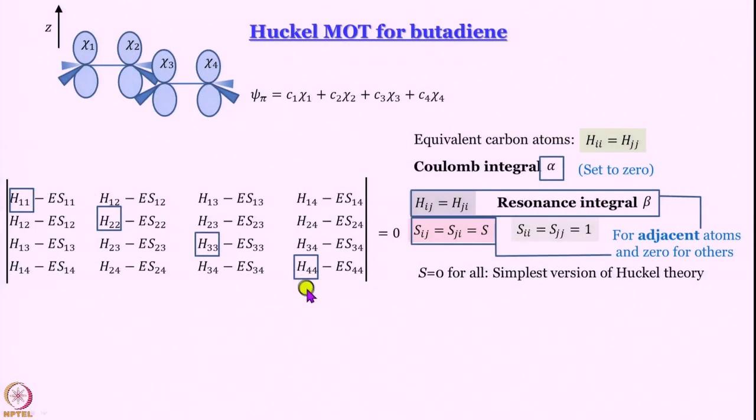So now this determinant becomes very simple. For all these H11, H22, H33, H44 I can write alpha and then I can happily set them to be equal to 0. S11, S22 all that is happily equal to 1. We do not have to worry about the overlap integrals. So what am I left with? I am left with wherever we have beta.